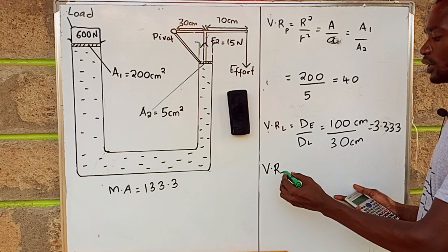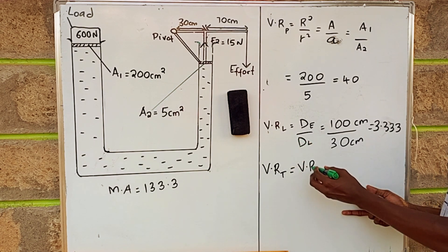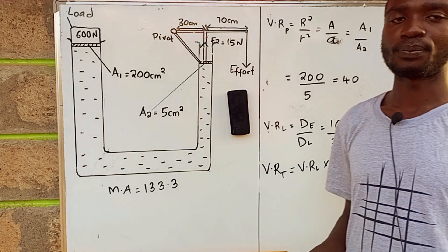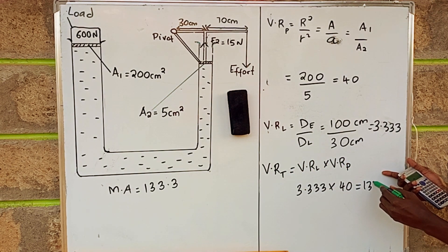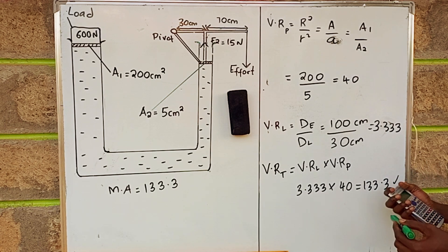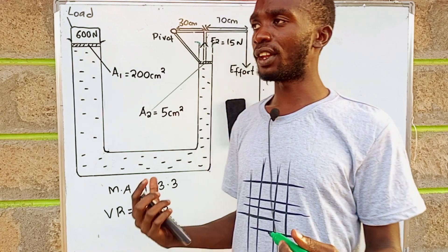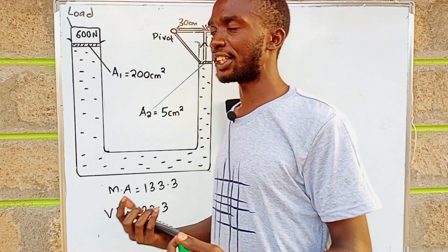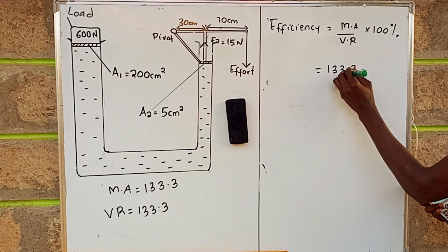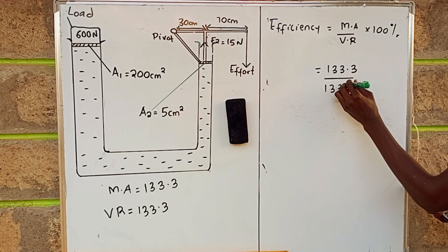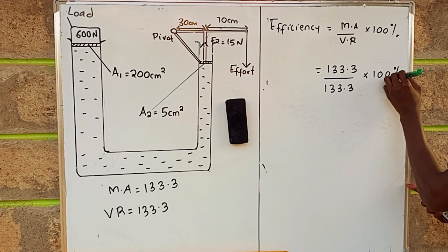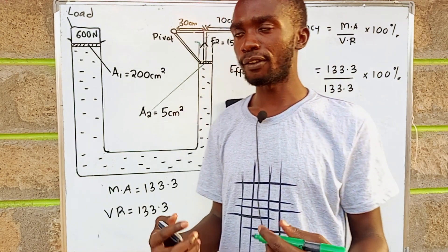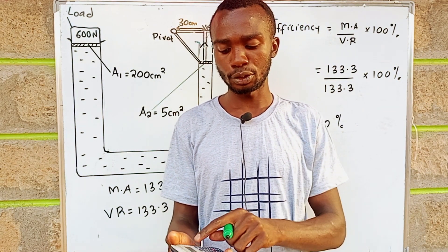The total velocity ratio is equal to the velocity ratio of the lever multiplied by the velocity ratio of the press: 3.333 multiplied by 40 gives a total velocity ratio of 133.3. To get the efficiency of the machine: efficiency is the ratio of mechanical advantage to velocity ratio, expressed as a percentage. That is 133.3 over 133.3 multiplied by 100%, giving an efficiency of 100%. Thank you and I'll be doing more questions on this YouTube channel.